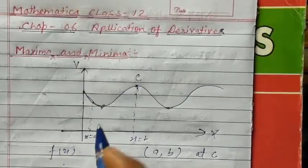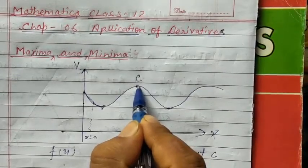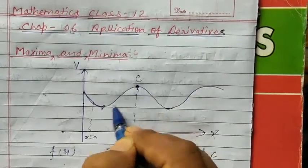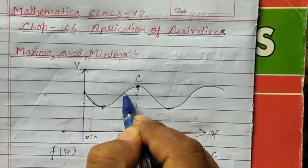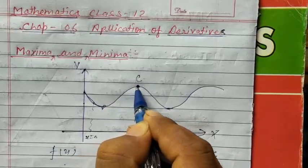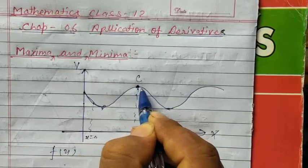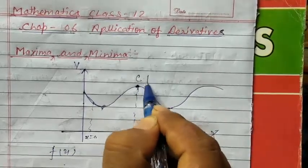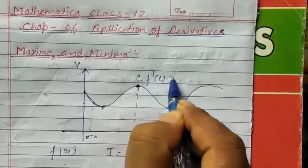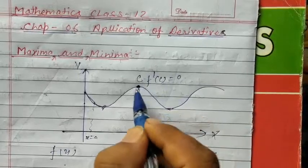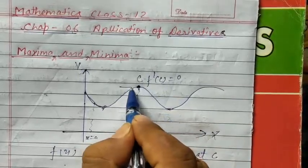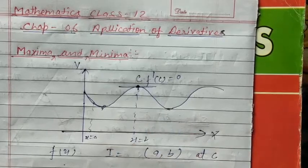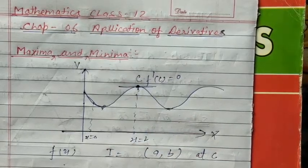Students, at the point c where the function has an extreme value, the value of the derivative of the function becomes zero. That is, if we draw a tangent at that point, f'(c) equals zero.